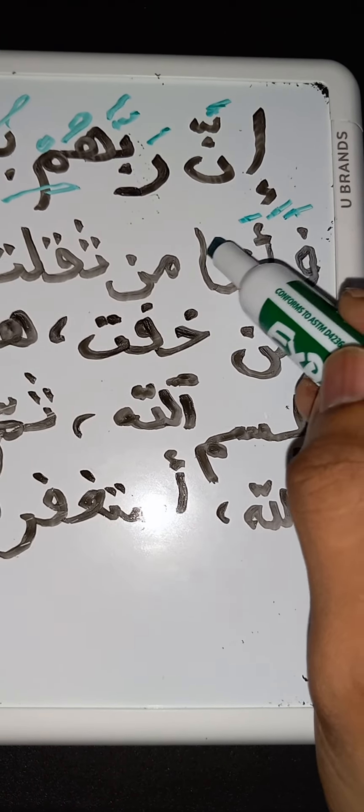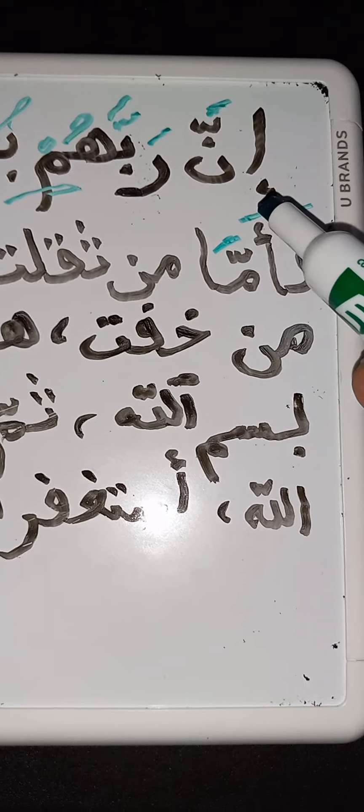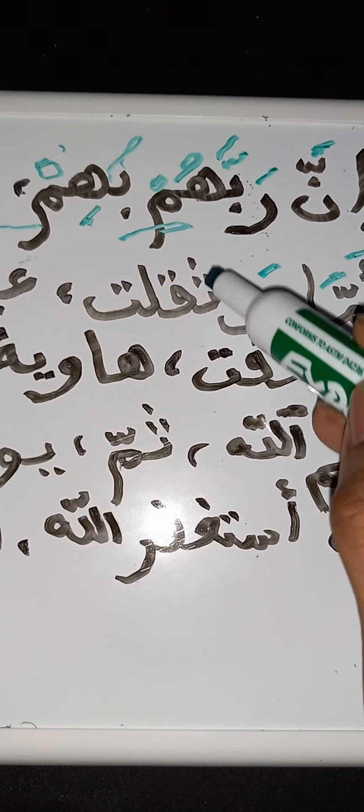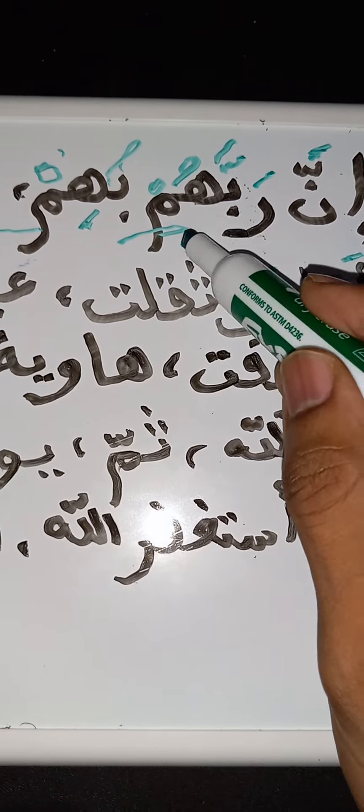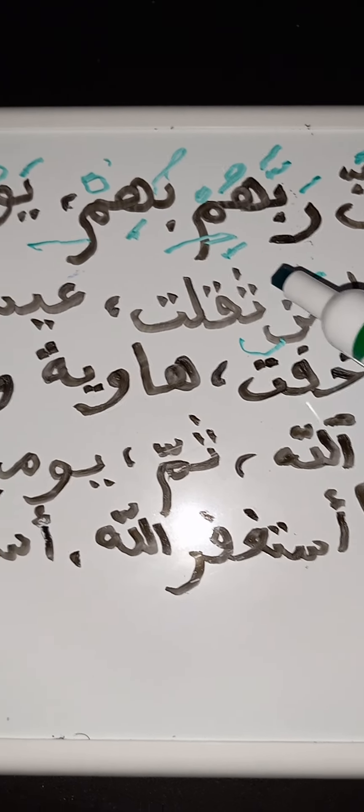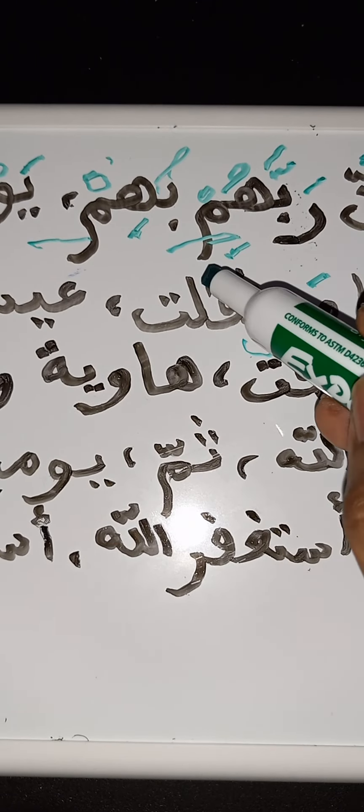So here again: fa fatha, fa hamza fatha, and this is an alif, fa meem shadda fatha — 'fa'amma.' Meem fatha 'maa,' then noon usakin, then thaa fatha — 'thaa.' So here we have a noon usakin situation: noon usakin followed by a thaa, making it ikhfa. 'Ma thakulat.'